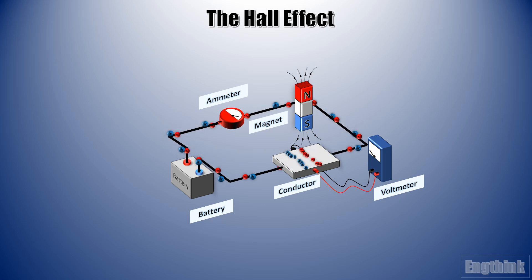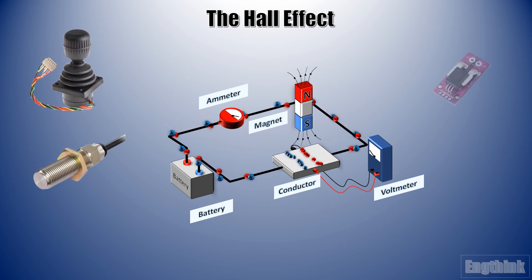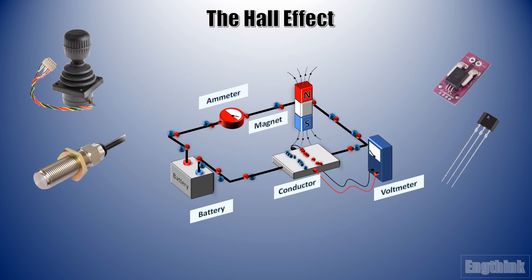This observation became known as the Hall effect, and it led to the development of new technologies for measuring magnetic fields and for the study of the properties of materials. The Hall effect is now widely used in many applications, including the design of magnetic field sensors, rotary position sensors, and also in Hall effect thrusters used in satellite propulsion systems.